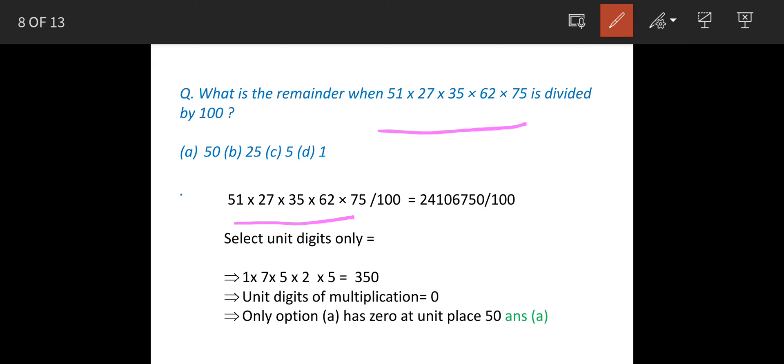When we multiply these numbers and divide by 100, the actual multiplication is shown here. When you divide this by 100, the last 2 digits, that means 50, is the remainder.